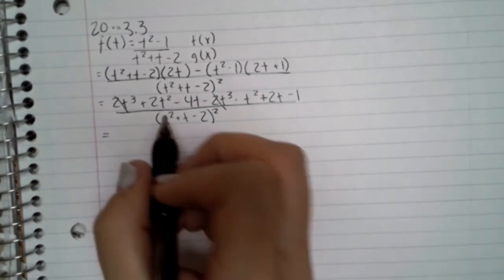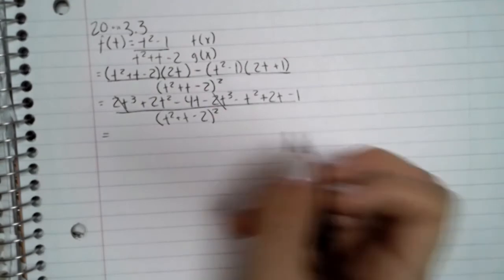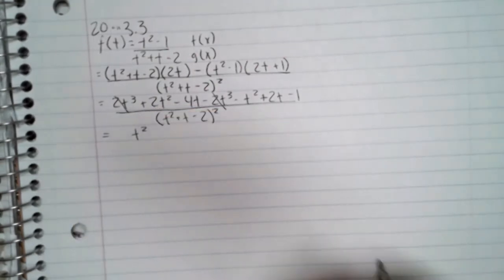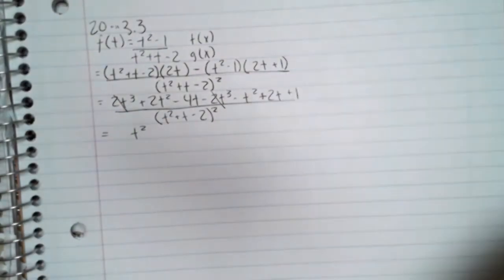So then you combine like terms. So then you have t squared... and sorry, one's the same. Negative 1 times 1 is negative 1.